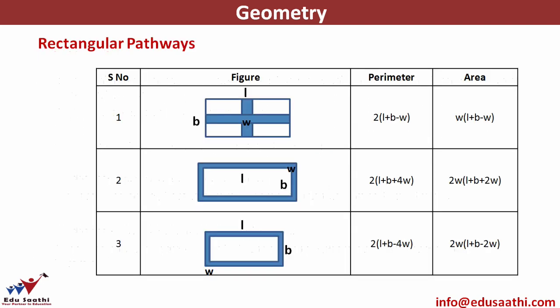The one part of 2D we need to look at is rectangular pathways. These are rectangular pathways that you have inside a figure. You can always find out the area and the perimeter of these rectangular pathways. You have two choices: either you can remember the formulas on the right-hand side, however I always recommend not remembering too many formulas and instead using the concept.